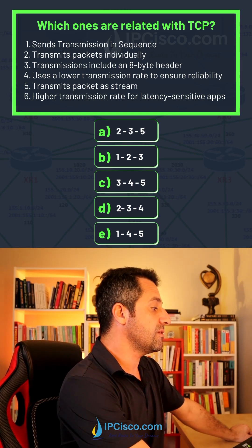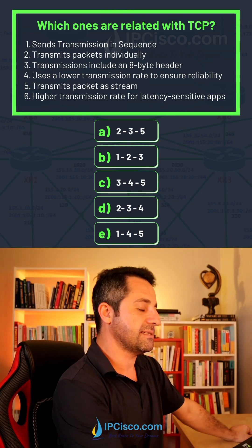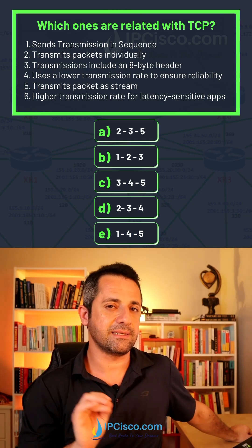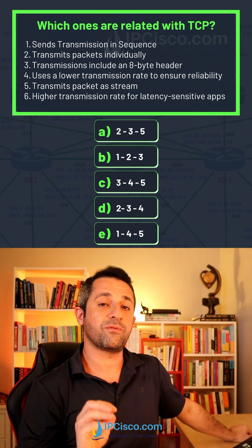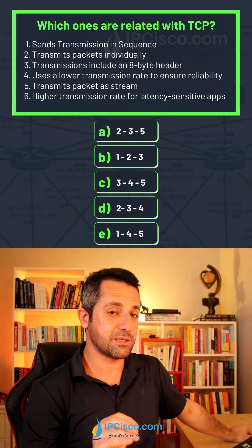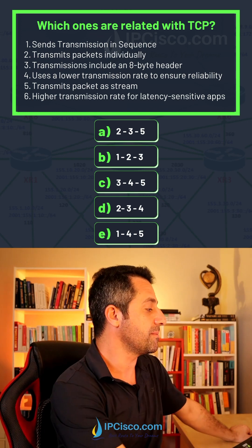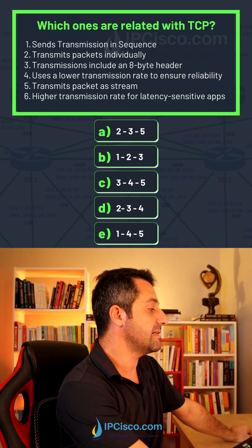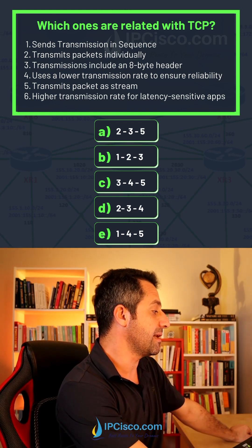Transmission includes an 8-byte header. No, this is not the property of TCP. This is the property of UDP. So, the 8-byte header is the UDP header.